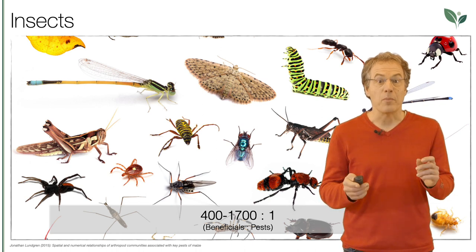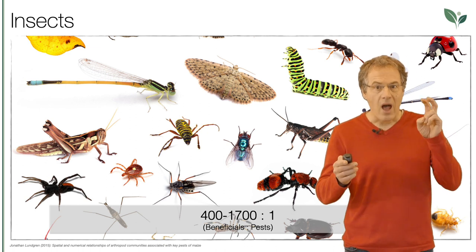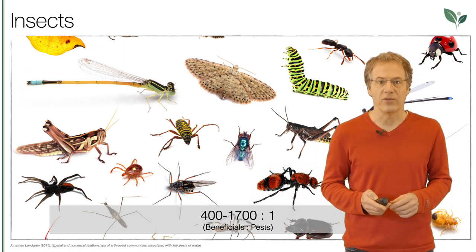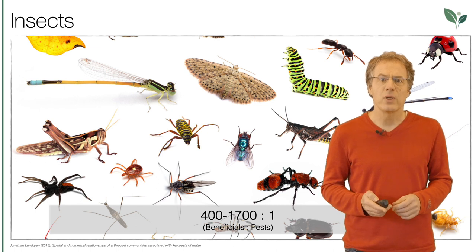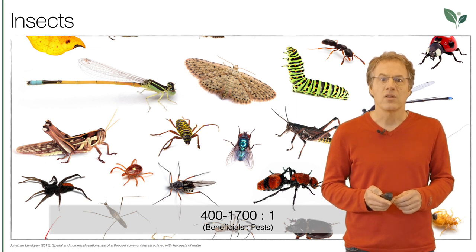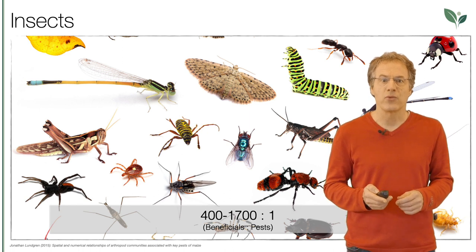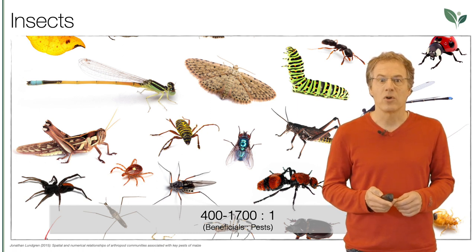Insects are often seen as the bad guys in agriculture. However, there are studies showing that for every harmful insect there are 400 to 1,700 positive or neutral ones. This clearly means that harmful insects are significantly outnumbered, and if we can develop systems that provide a high variety of insect habitats, there will be significantly fewer problems with them. On the other hand, if we apply insecticides to control a harmful insect, this can be fatal for a large number of other insects that could normally positively influence the system.